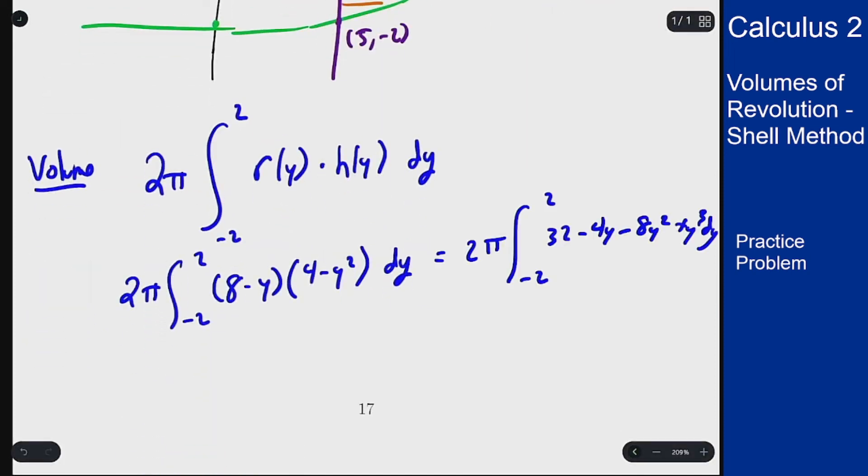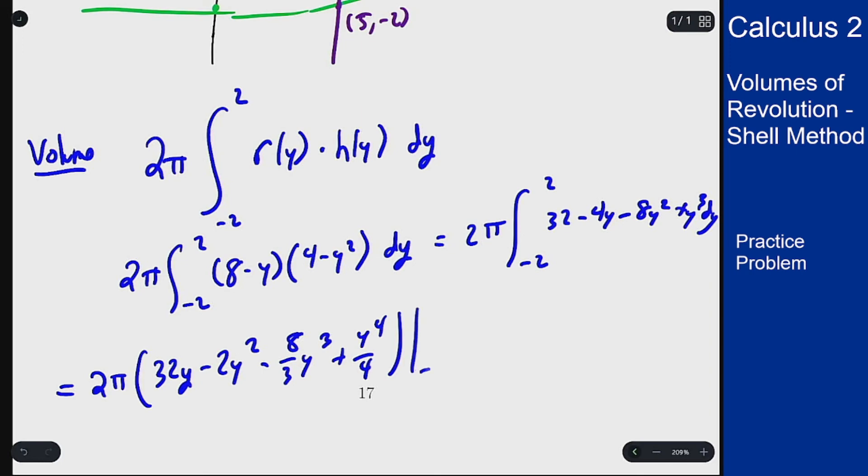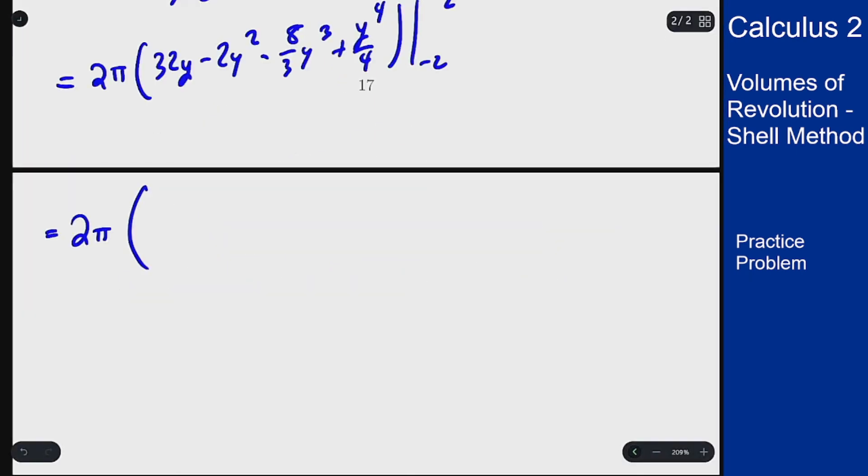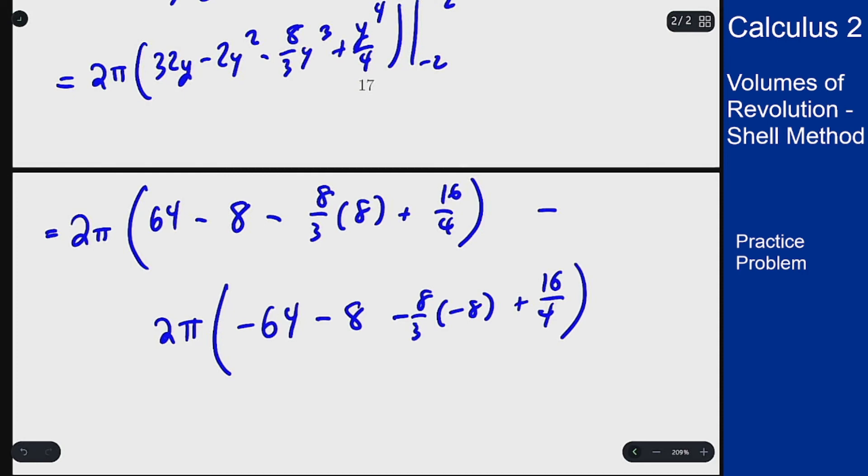We can expand. We can now integrate and plug in minus 2 and 2, which will give us the following. Plug in 2, subtract 2 pi times plugging in minus 2.